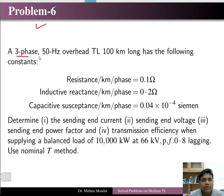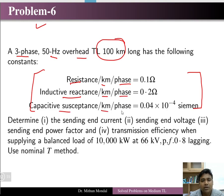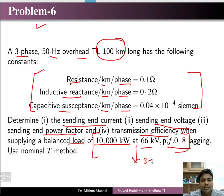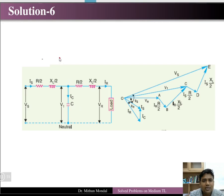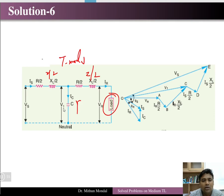Problem 6: A three-phase 50 Hz overhead transmission line, 100 km long (medium length), is given with resistance, inductive reactance, and capacitive reactance per kilometer per phase. Determine the sending end current, sending end voltage, sending end power factor, and transmission efficiency for a balanced load of 10,000 kW at 66 kV. Use the nominal T method.